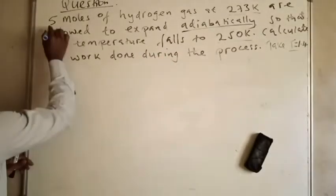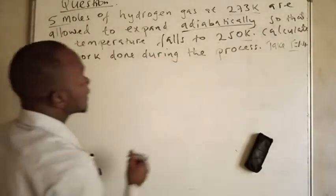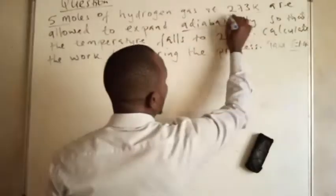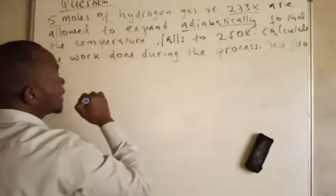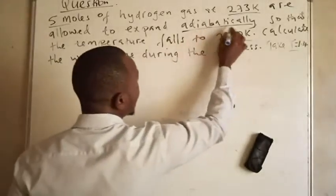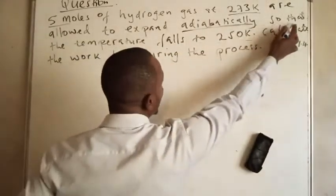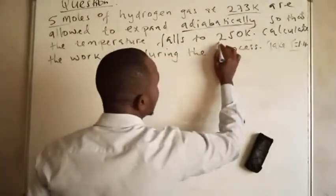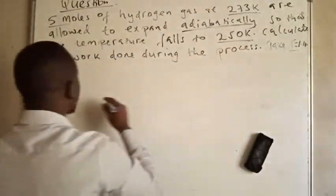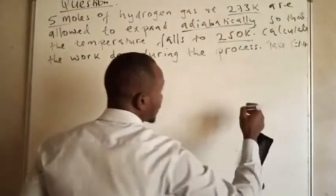So the question says: 5 moles of hydrogen gas at 273 Kelvin are allowed to expand adiabatically so that the temperature falls to 250. And we also have the heat capacity ratio, which is also known as the adiabatic index, which is 1.4.